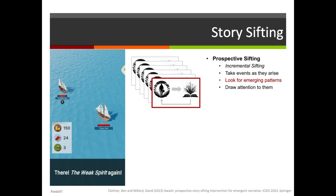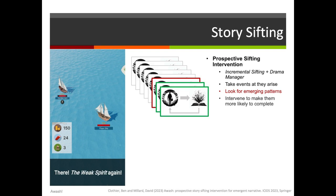Prospective sifting can be used in interactive games — you can look at what is going on and draw the player's attention. In one of our own experimental games, I worked with Ben Clothier, a university student at Southampton, to create a game called Awash. Awash does prospective story sifting intervention — it's like an incremental sifter. It takes events as they arise and looks for emerging patterns, but it goes one step further: it intervenes in the simulation, or in the game, in order to make those patterns more likely to complete.